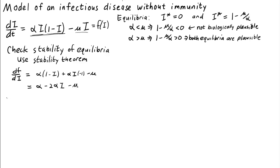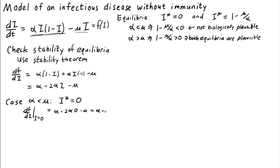The first case is when alpha is less than mu. Then we have only one equilibrium, i* equals zero. The derivative df/di at i equals zero is alpha minus 2*alpha*0 minus mu, which is just alpha minus mu. Given that alpha is less than mu, alpha minus mu is negative. So by the stability theorem, the single equilibrium i equals zero is stable.